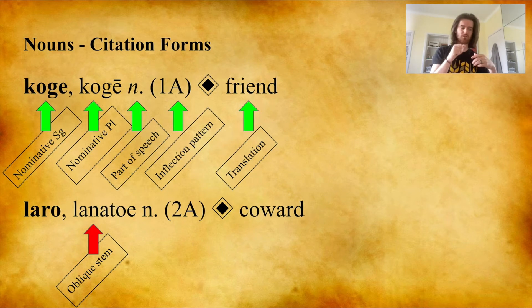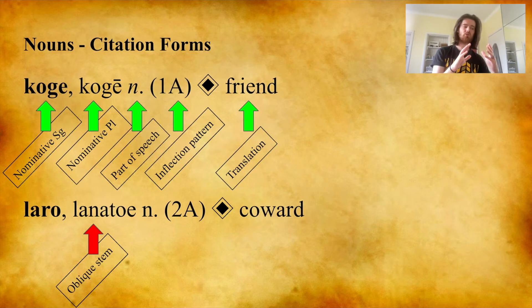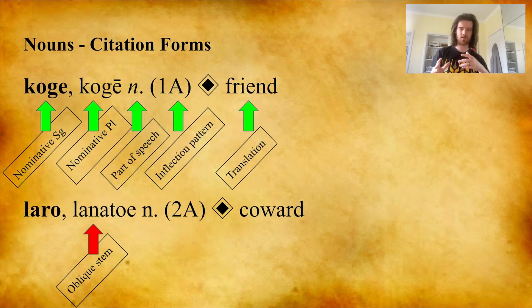We'll see here as well that the inflection pattern for koge is 1a — it belongs to the first declension — and laro belongs to the second declension. Let's start with the first declension.